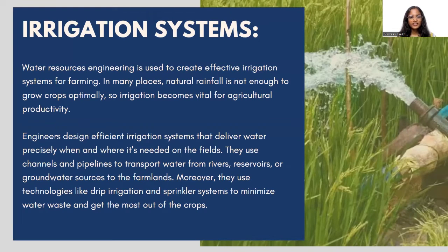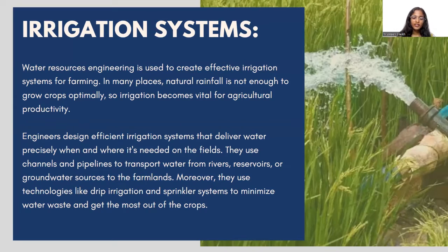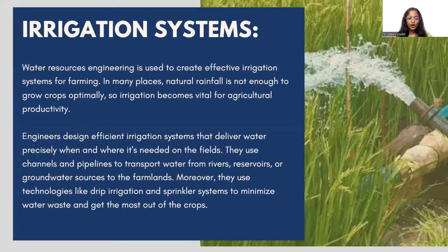The second example is irrigation systems. Water resources engineering is used to create effective irrigation systems for farming. In many places where natural rainfall is not enough to grow crops optimally, irrigation becomes vital for agricultural productivity. Engineers design efficient irrigation systems that deliver water precisely when and where it's needed on the field. They use channels and pipelines to transport water from rivers, reservoirs, or groundwater sources to farmlands, and use technologies like drip irrigation and sprinkler systems to minimize water waste and maximize crop yield.